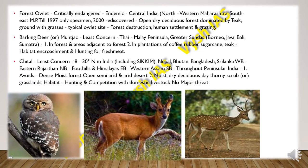Then we have the Chital, which is again of least concern. It is found between 8 to 30 degrees north latitude in India including Sikkim, and in Nepal, Bhutan, Bangladesh, Sri Lanka, West Bengal, Eastern Rajasthan, the Himalayan foothills and western Assam. It is found throughout peninsular India and avoids dense moist forests and open semi-arid and arid deserts. They are found in moist, dry, deciduous and thorny scrub regions or grasslands. The main threats are habitat loss, hunting and competition with livestock, though as of now they don't face any major threat.